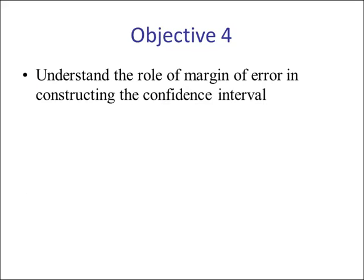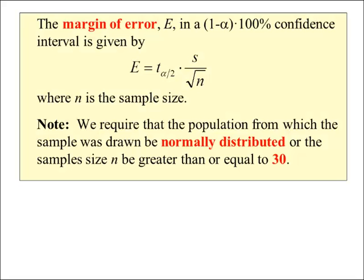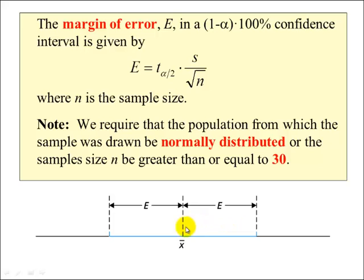Lesson objective — the margin of error: the margin of error, denoted E or MOE, in a (1-alpha)×100% confidence interval is given by E = t* × (s / √n), where t* is the critical t-value from Table 6, s is the sample standard deviation, and n is the sample size. We require the population to be normally distributed if the sample size is less than 30; if n > 30, the Central Limit Theorem ensures x-bar is approximately normal.